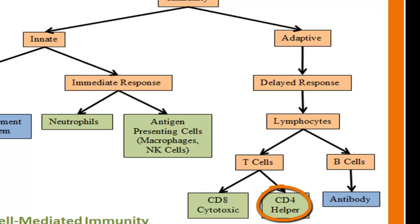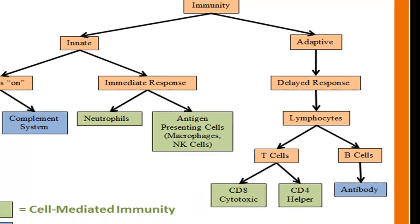CD4 T cells, which are named for their CD4 surface markers, are referred to as the helper T cell. They do not fight pathogens directly, but help various other cells to do so by releasing cytokine signals. There are two subtypes of CD4 helper T cell: Th1 and Th2. Th1 helper T cells primarily activate cytotoxic CD8 T cells and macrophages, while Th2 helper T cells primarily activate B cells.